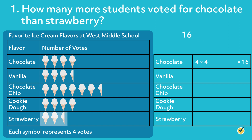There are 2 whole symbols and 1 half symbol next to strawberry. Remember that each whole symbol equals 4 votes and each half symbol equals 2. Multiply the number of whole symbols by 4 and add 2 to the product for the half symbol. 2 times 4 equals 8, and 8 plus 2 equals 10. Therefore, 10 students voted for strawberry. To figure out how many more students voted for chocolate than strawberry, subtract the strawberry votes from the chocolate votes. 16 minus 10 equals 6, so 6 more students voted for chocolate than strawberry.